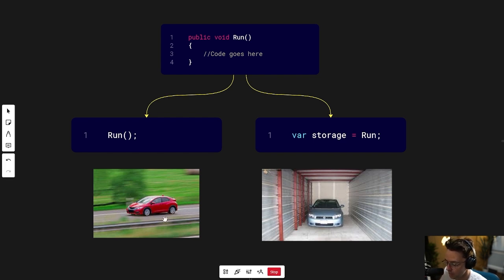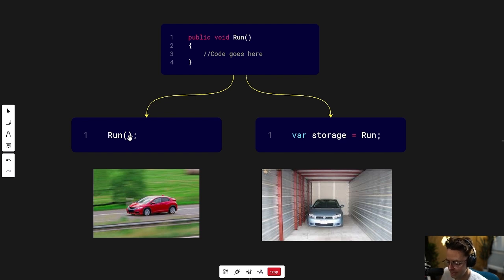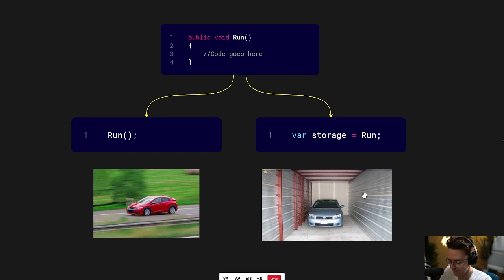A method can be running, and a method can also just be stored in memory. Whenever you use the parentheses, you are causing a function to run — it is executing. It is now a car that is in motion, and a car that is in motion cannot be put in a storage unit, so to speak. If something is in motion, it's in motion and nothing else is going on.